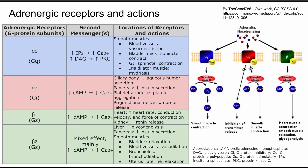The location of the alpha-1 adrenergic receptor is in the smooth muscles throughout the body. In the blood vessels, smooth muscle constriction causes vasoconstriction and increases blood pressure. In the bladder neck and GI tract, alpha-1 can cause sphincter contraction — so you hold in your urine and stools. The iris dilator muscle in the eye can result in mydriasis.